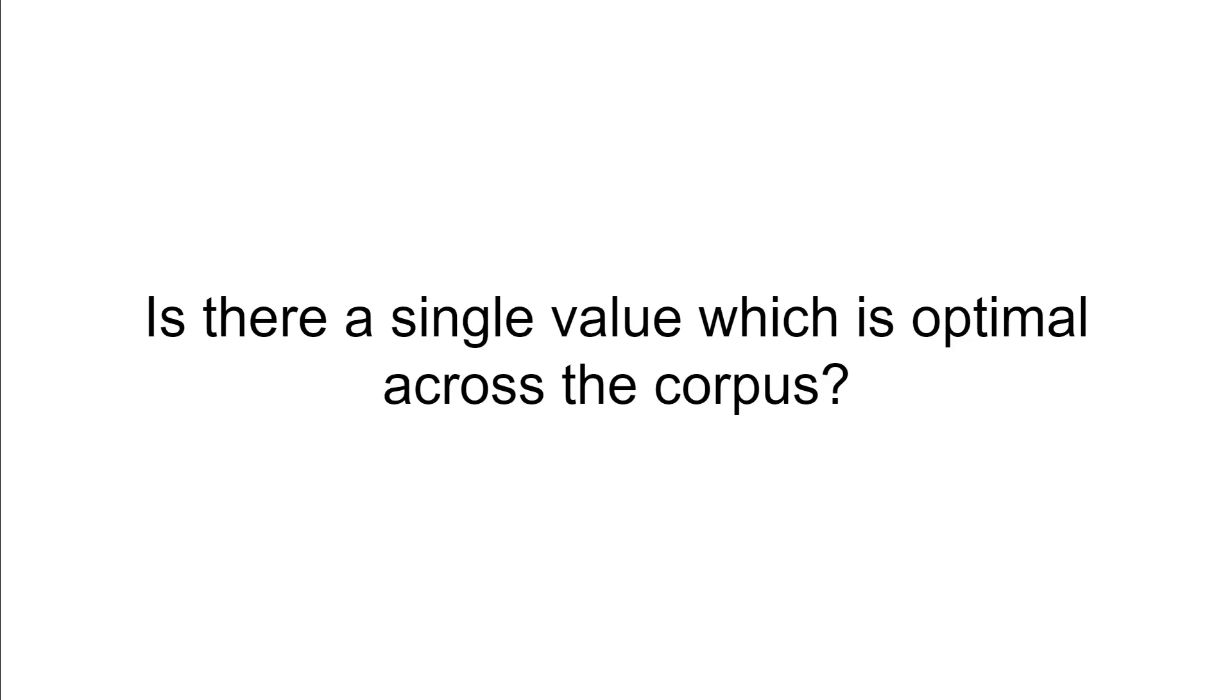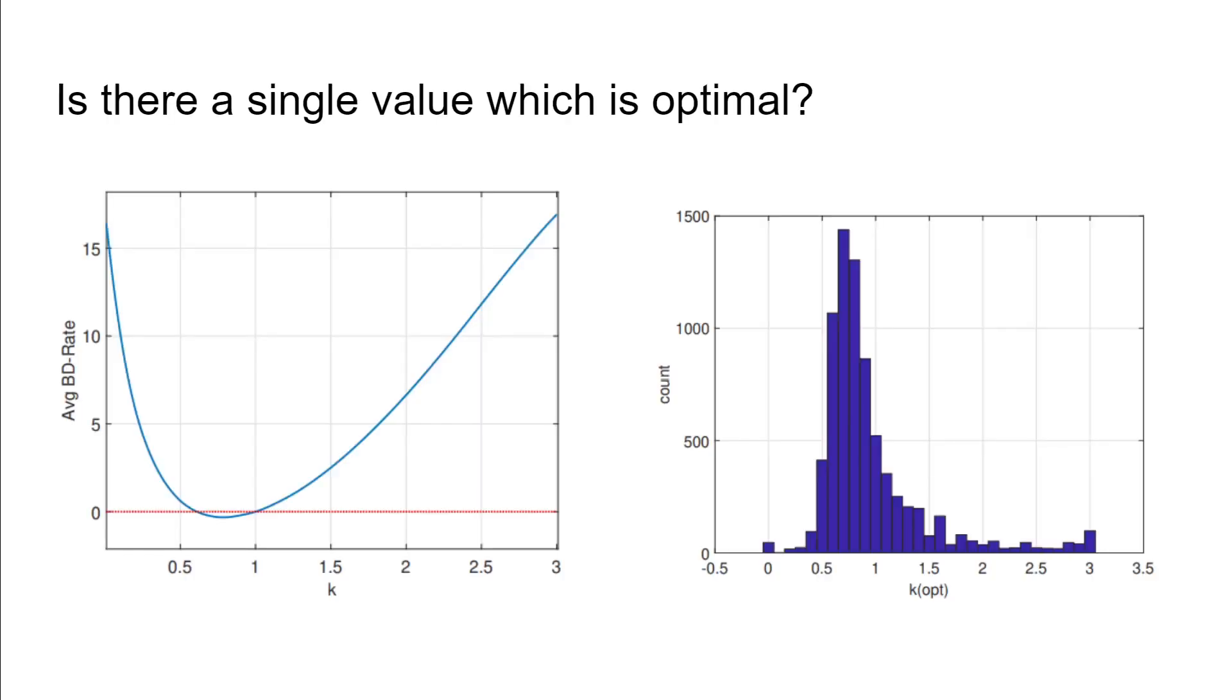The first question is: is there a single value which is optimal across the corpus? We tried to see what is the average BD rate improvement across the corpus per value of k. We see that in the 0.7 to 0.8 range, we have our best BD rate improvement across the entire corpus. From the direct optimizer, we have a histogram where our optimal k tended to be in that same 0.7 to 0.8 range.